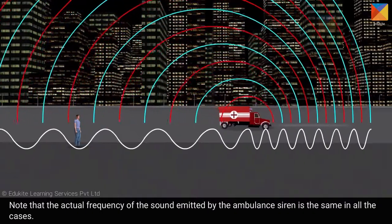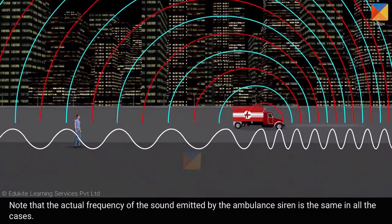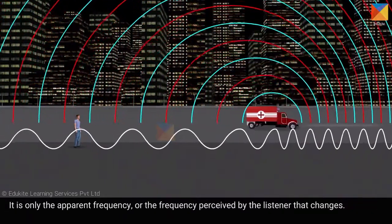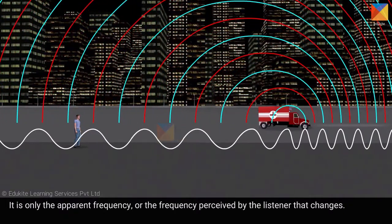Note that the actual frequency of the sound emitted by the ambulance siren is the same in all the cases. It is only the apparent frequency, or the frequency perceived by the listener, that changes.